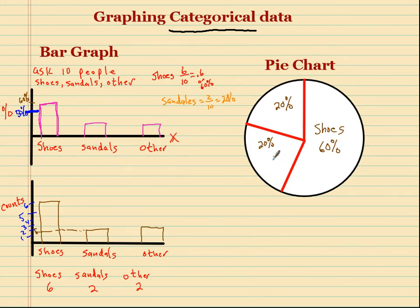That's a great strategy to use when doing pie charts, when making them on your own. Okay, so my other two data points are the sandals, and the other 20% had other.